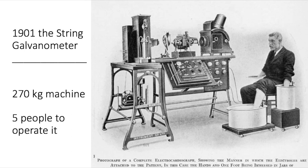This device used a very thin filament of conductive wire passing between very strong electromagnets, and when a current passed through that filament, the magnetic field created by the current would cause the string to move. There was a light shining on that string and it would cast a shadow on a moving roll of paper. This original machine required water cooling for the powerful electromagnets. He did win the Nobel Prize for his invention in 1924, and while his science still influences our knowledge today, the technological advances have been vast.